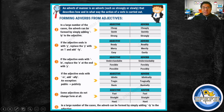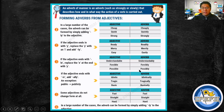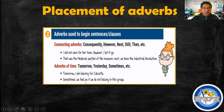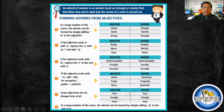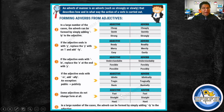Such as: ready → readily, easy → easily. Number three: if the adjective ends with -le, replace the e at the end with -y. For example: possible → possibly, forcible → forcibly. Number four: if the adjective ends with -ic, add -ally. An exception could be 'public' — we say 'publicly'. For example: tragic → tragically, basic → basically.